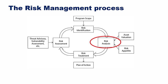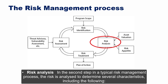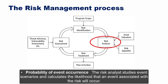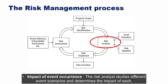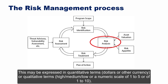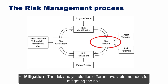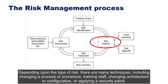In risk analysis — the second step — the risk is analyzed to determine several characteristics. First, probability of event occurrence: the likelihood that an event will occur, typically expressed as the number of likely events per year. Second, impact of event occurrence: expressed in quantitative terms (dollars) or qualitative terms (high/medium/low or a numeric scale of 1 to 5 or 1 to 10). Third, mitigation: studying available methods including changing a process, training staff, changing architecture, or applying a security patch.